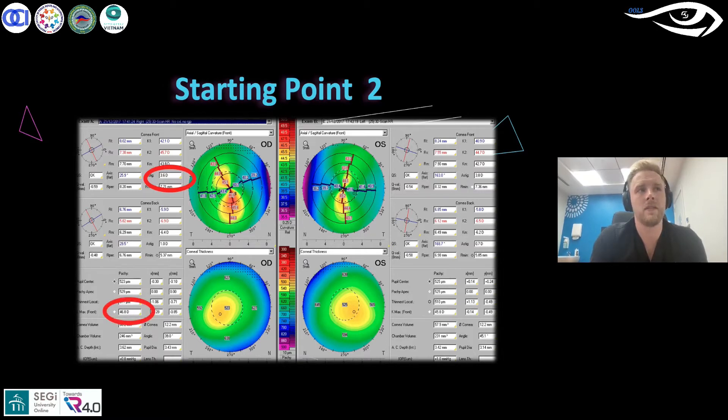We know that most corneas are roughly 40 diopters. This keratoconus has increased that to 46.8. Generally, if it's below 50, we would put it in this sort of mild category. Once you're 65-70, then you're getting more advanced keratoconus.